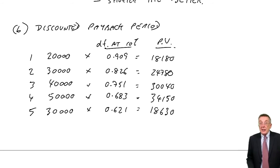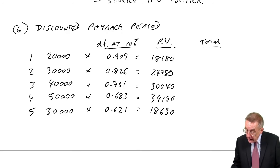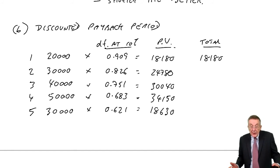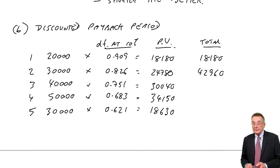We do exactly the same as before, but on these present values, the discounted amounts. After one year, we've had 18,180. We need 100,000, so we're obviously way off. The second year, we get an extra 24,780, so we've now got a total of 42,960. Still not enough. We need 100.